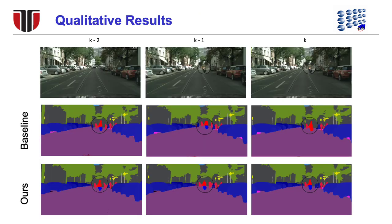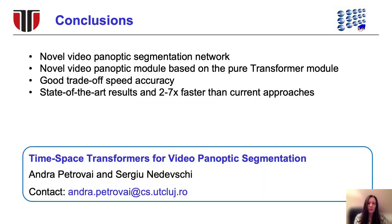We present qualitative results on a sequence of three consecutive frames. The baseline network, on the second row, fails to segment the motorcycle in the third frame. Our VPS transformer network provides better temporal consistency. The rider and motorcycle are correctly segmented in all three frames.